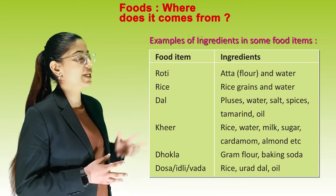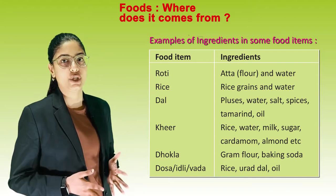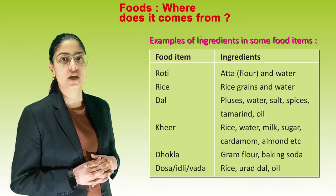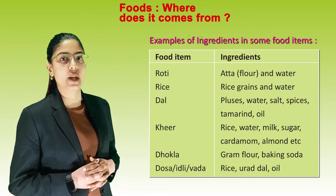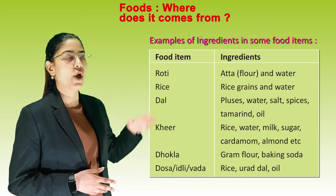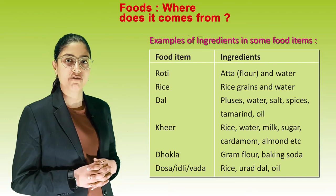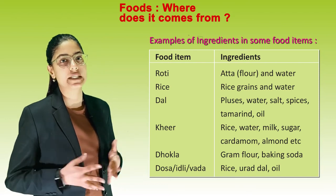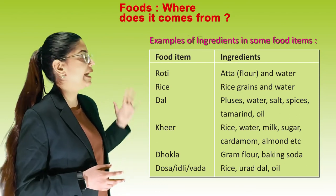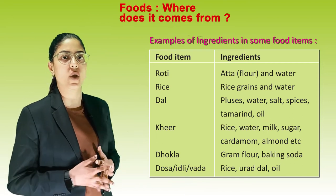Kheer — rice, water, milk, sugar, cardamom, and almond, etc. Dhokla — gram flour and baking soda. Dosa, idli, or vada — rice, urad dal, and oil.